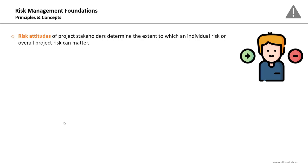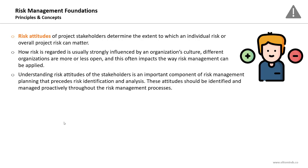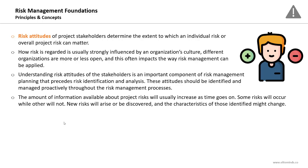Risk attitudes of project stakeholders determine the extent to which individual or overall project risk matters. It is important to understand the risk acceptance levels of stakeholders and the organization — this helps you know how to deal with specific risks. How risk is regarded is strongly influenced by an organization's culture. Risk attitudes should be documented as part of the risk management plan and managed proactively throughout the risk management processes.